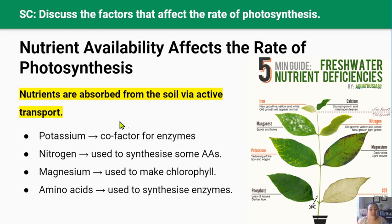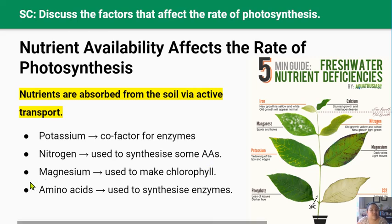These nutrients are important because potassium is a cofactor for enzymes, nitrogen is used to make amino acids, magnesium is used to make chlorophyll, and amino acids are used to synthesize enzymes.